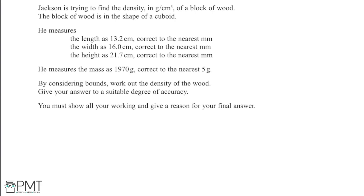In this question, Jackson is trying to find the density in grams per centimetre cubed of a block of wood. The block is in the shape of a cuboid. He measures the length as 13.2 cm, the width as 16.0 cm, and the height as 21.7 cm, all correct to the nearest millimetre. He measures the mass as 1970 grams correct to the nearest five grams. We're asked to use bounds to work out the density, showing our working and giving a reason for the final answer.